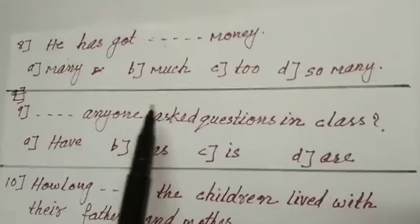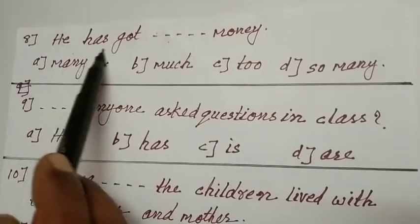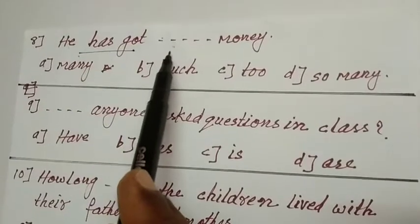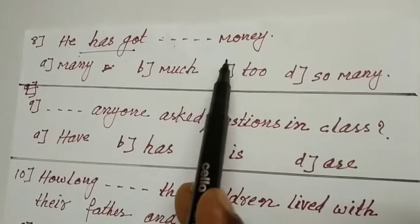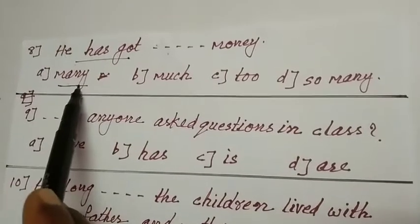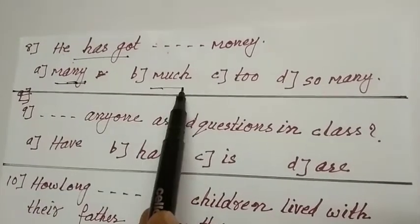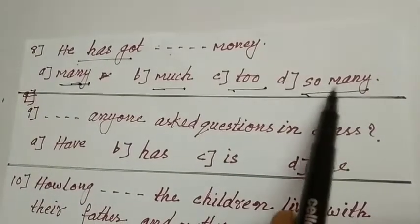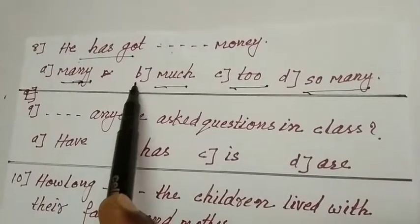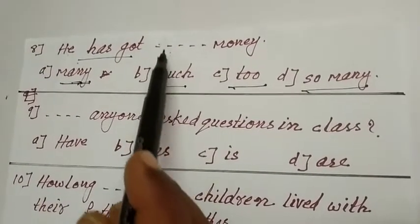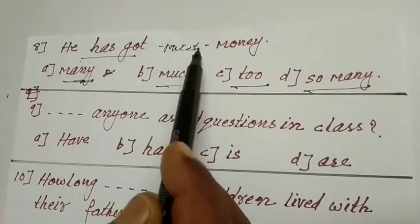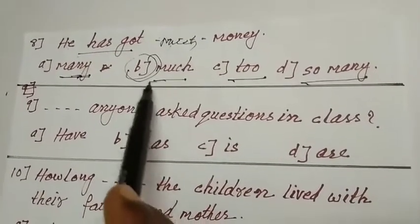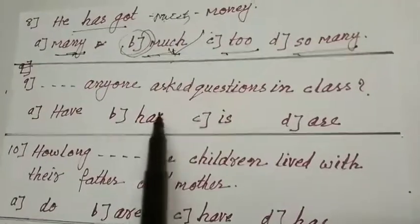Now come to the eighth one. He has got dash money. Many money, much money, too many, so many. He has got so many money is wrong. That is why much money, M-U-C-H, much. B is your answer.